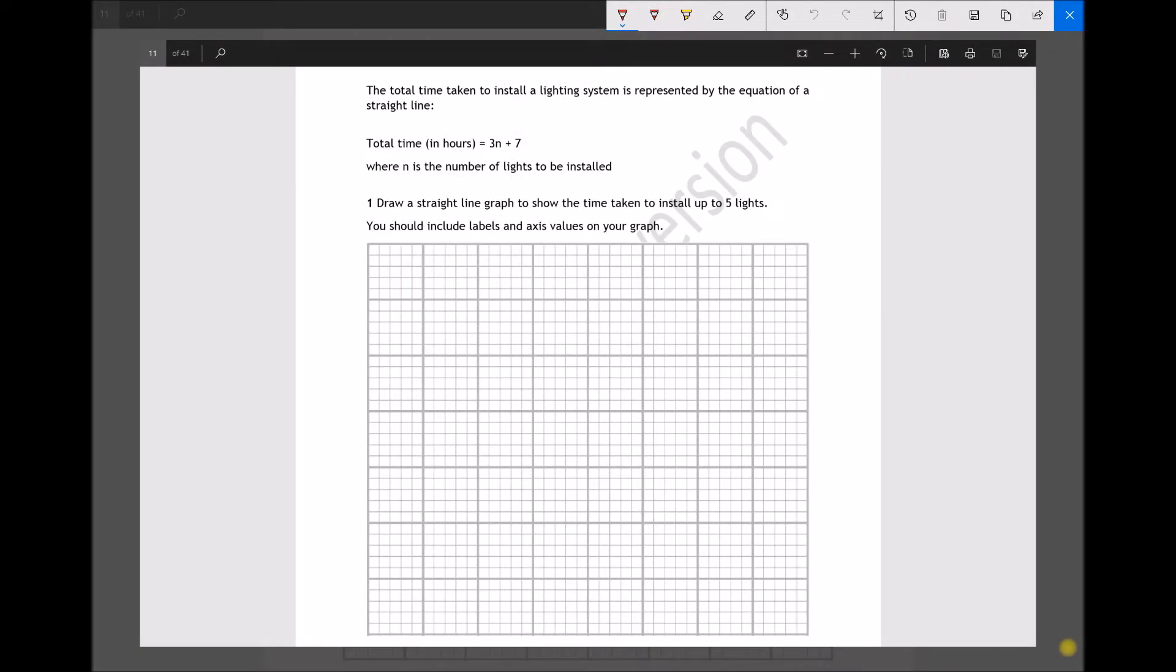Question 1 is a graph plotting activity and it reads as follows: the total time taken to install a lighting system is represented by the equation of a straight line where the total time in hours equals 3n plus 7, where n is the number of lights to be installed. The question asks, draw a straight line graph to show the time taken to install up to 5 lights. You should include labels and axes values on your graph.